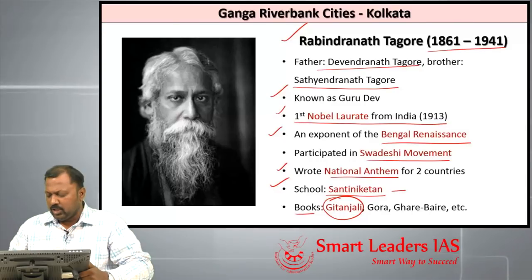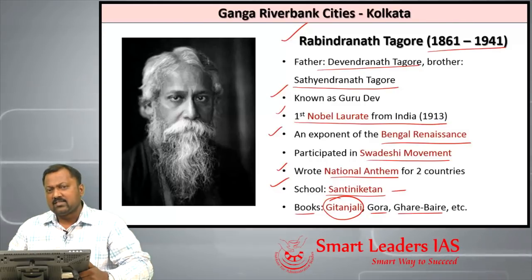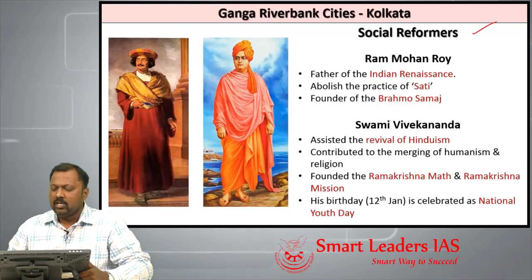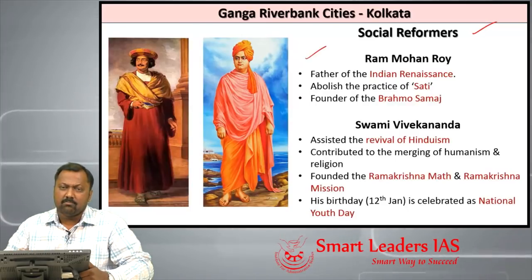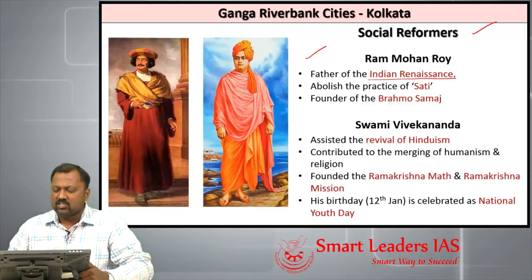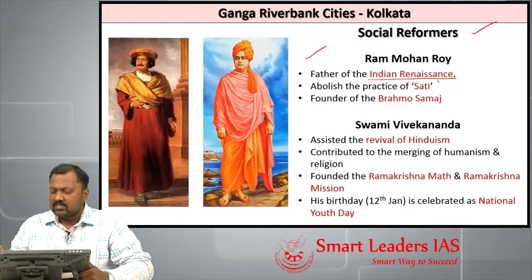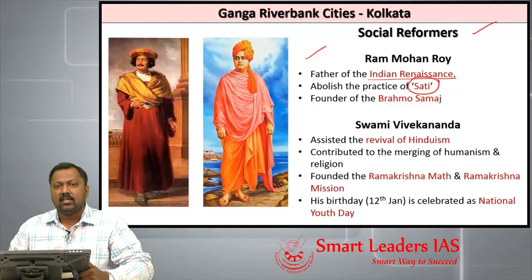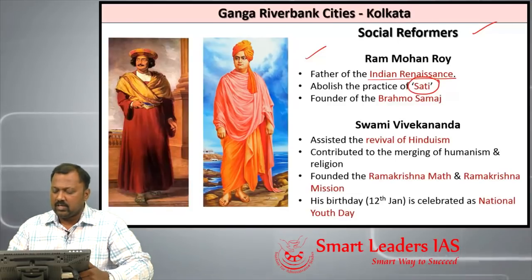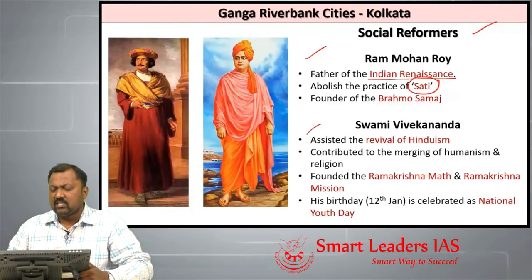Tagore's notable books include Gora and Ghare Baire. Other social reformers from Kolkata include Raja Ram Mohan Roy, considered the first modern man of modern India, the father of Indian Renaissance, and founder of Brahmo Samaj of India. It was through his efforts that Sati was abolished in 1829.